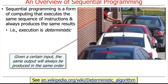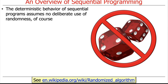You place your order at the order placement window, drive up to the payment window, pay, then drive to the next window and pick your food up. It's always done in lockstep, in order, and things are served sequentially. This deterministic property of sequential programming, of course, assumes there's no deliberate use of randomness.